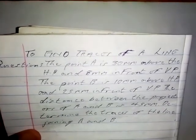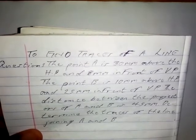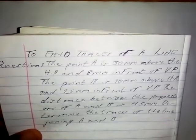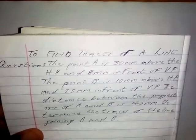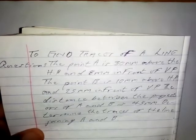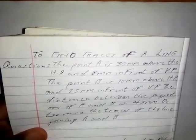We are using this question: Point A is 30 millimeters above the horizontal plane and 8 millimeters in front of the vertical plane. Point B is 10 millimeters above the horizontal plane and 25 millimeters in front of the vertical plane. The distance between the projectors of A and B is 45 millimeters. Determine the traces of the line joining A and B.